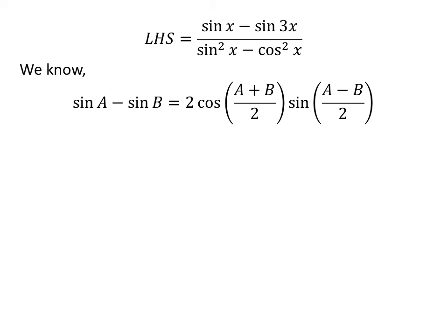We know the famous trigonometry identity: sine of A minus sine of B is equal to 2 times cosine of half of A plus B times sine of half of A minus B. The proof of this trigonometry identity is given in the video appearing in the upper right corner, and the link is also given in the description section.